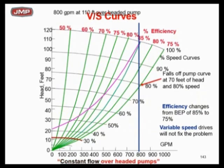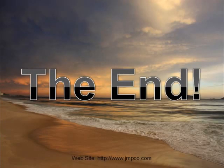Here's where the pump falls off the curve — the selection is 800 GPM, 110 feet of head. A variable speed drive will not fix this problem. If you insist on picking a pump that's over-headed, a variable speed drive is not going to fix it. You're going to have to throttle that pump to get it back up on the curve, and at that point you've broken the energy code.